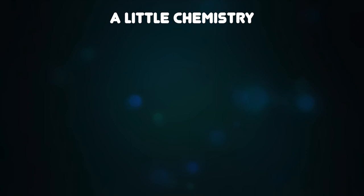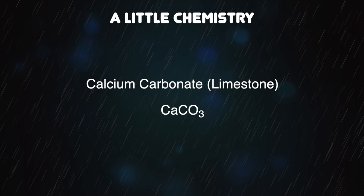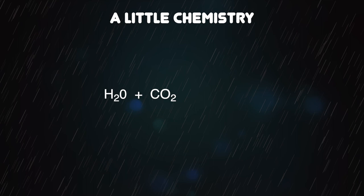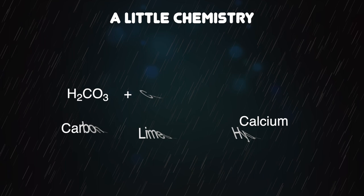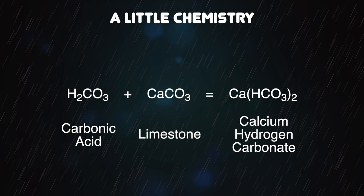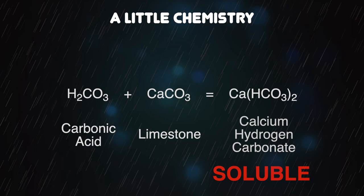It's now time for a short chemistry lesson. Limestone is a chemical compound called calcium carbonate. Calcium carbonate is insoluble. When raindrops fall, they react with the carbon dioxide in the air to form a weak acid called carbonic acid. Carbonic acid reacts with limestone to form a new compound called calcium hydrogen carbonate, and calcium hydrogen carbonate is soluble. And that quite simply is how caves are made, by the action of carbonic acid dissolving limestone.